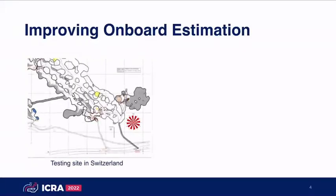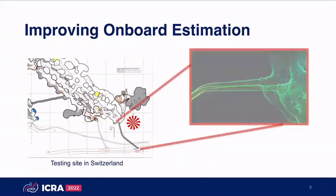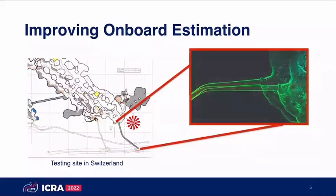This can be very interesting — for example, here is a testing site in Switzerland where our robots become degenerate as soon as they enter this particular tunnel system. That means we end up with shifted maps, which is quite critical because we cannot guarantee a safe exploration for the remaining part of the mission.